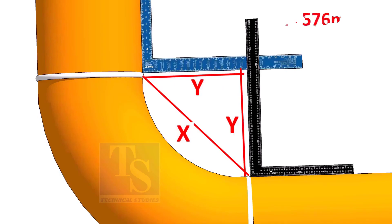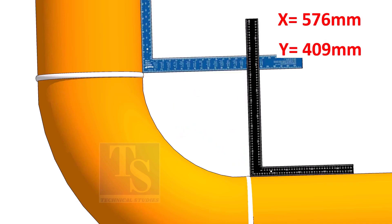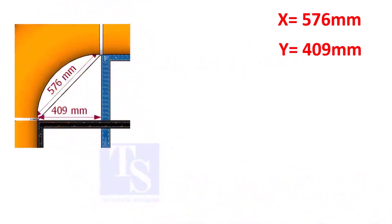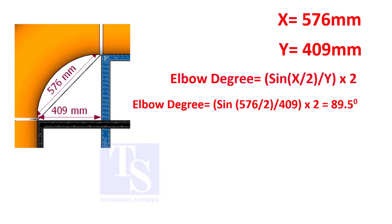Assume that the value of x is 576 and the value of y is 409 millimeters. Apply the formula. The answer is 89.5 degrees.